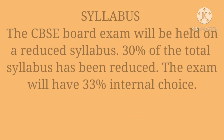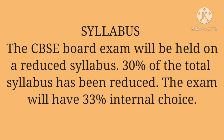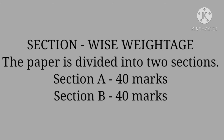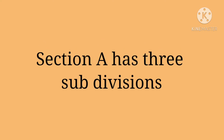The CBSE board exam will be held on a reduced syllabus — 30 percent of the total syllabus has been reduced. The exam will have 33 percent internal choice. Section-wise weightage: the paper is divided into two sections — Section A and Section B — each of 40 marks. Section A has three subdivisions.